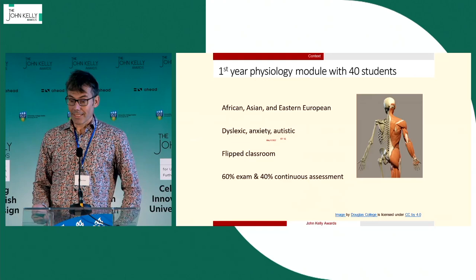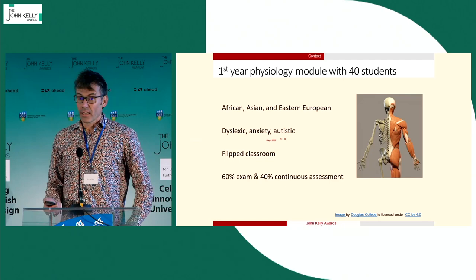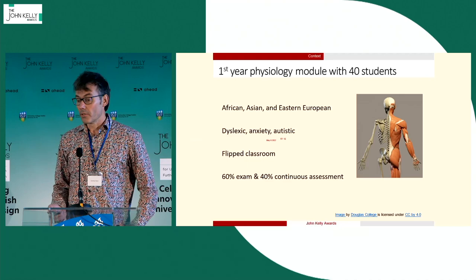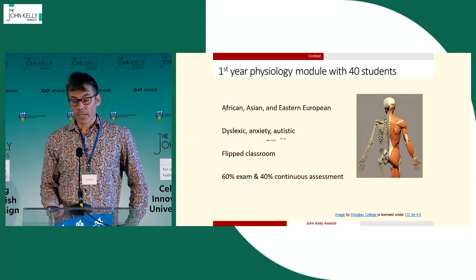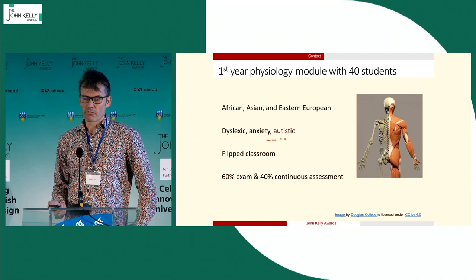The module is a first-year physiology module. Typically there are about 40 students in the class. In addition to Irish students, there are also students who have African, Asian, and Eastern European heritage, and students who identify as being dyslexic, have anxiety issues, or are autistic, among other things. Prior to the UDL implementation, the assessment schedule was a 60% closed-book written exam and a 40% continuous assessment.